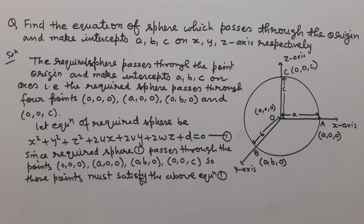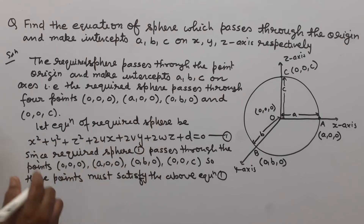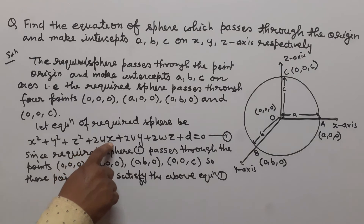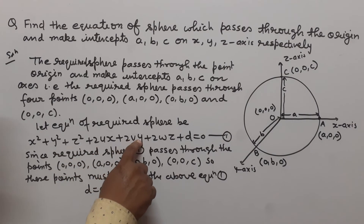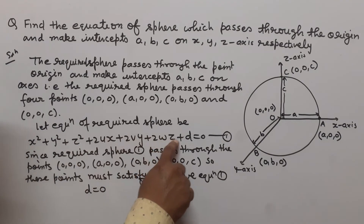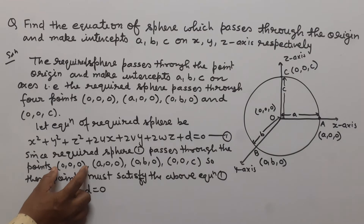We substitute these points into the equation to find the values of U, V, W, and D. First, we substitute (0, 0, 0) in place of x, y, z. All terms become 0 except D, so we get D = 0. When we put (0, 0, 0) in equation 1, we get D = 0.